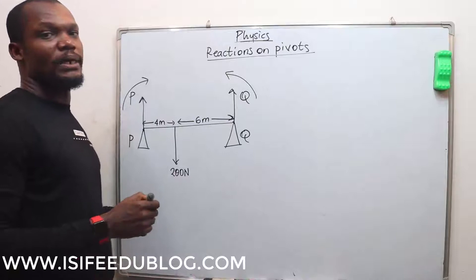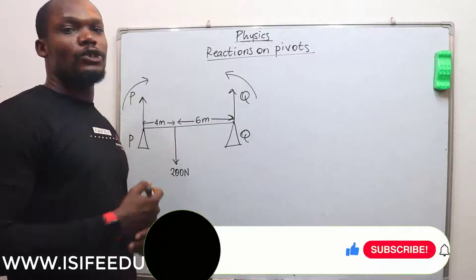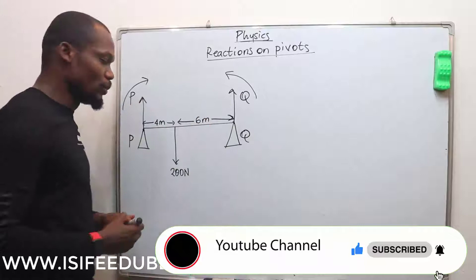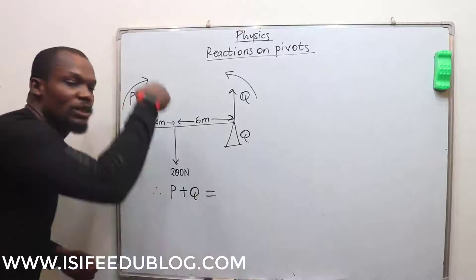The first thing we do is equate total upward force to total downward force. The total upward force here is P and Q, which means that P plus Q has to give us the total downward force of 200.